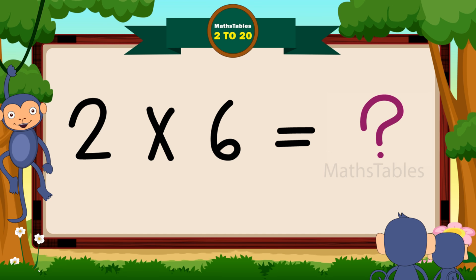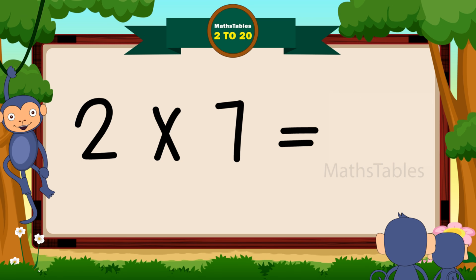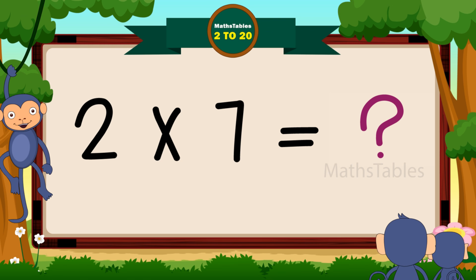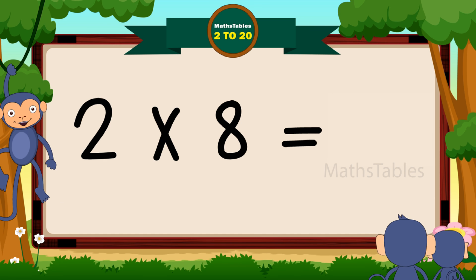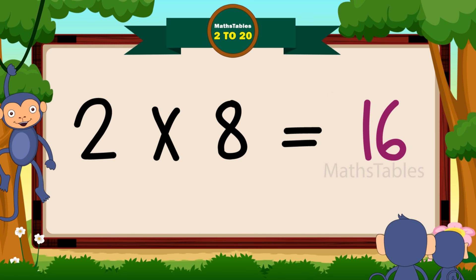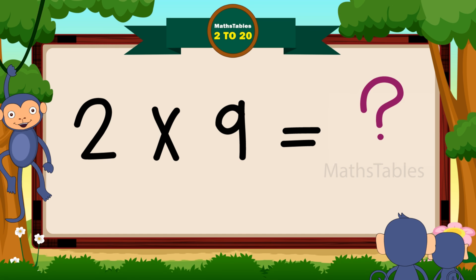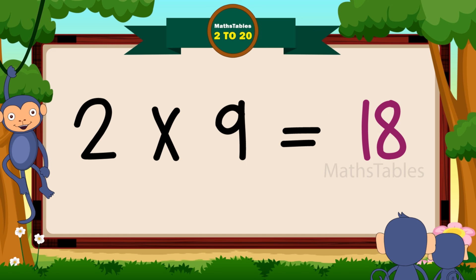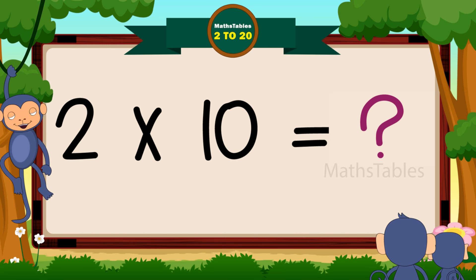Two sixes are twelve. Two sevens are fourteen. Two eights are sixteen. Two nines are eighteen. Two tens are twenty.